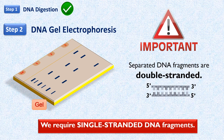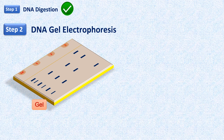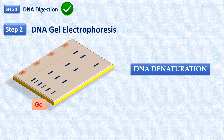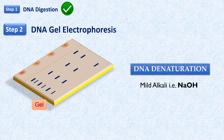Therefore, before moving to the next step, these DNA fragments are denatured in the gel. This is done by exposure of the gel to mild alkali — the gel is soaked in a denaturing solution containing sodium hydroxide. Sodium hydroxide denatures the DNA by disrupting hydrogen bonds between the two complementary strands.